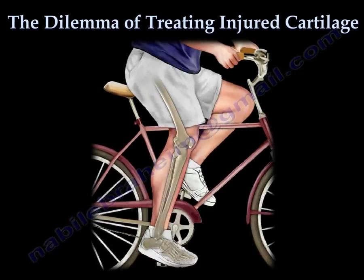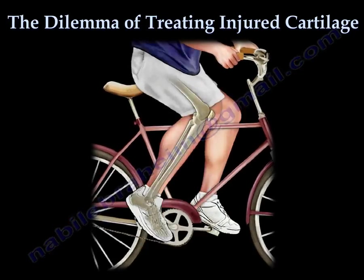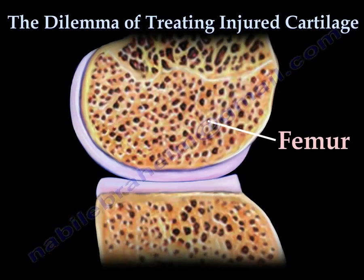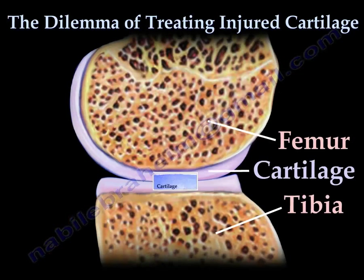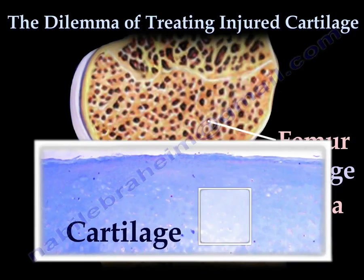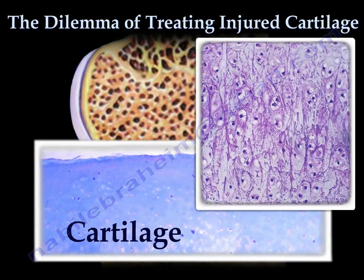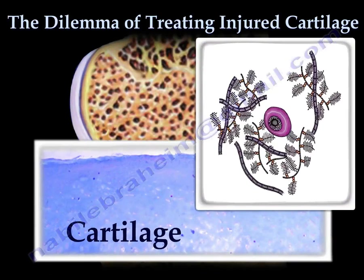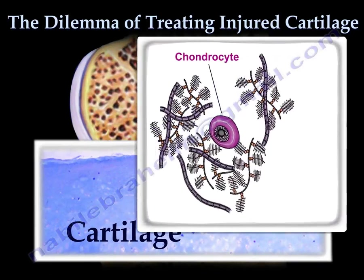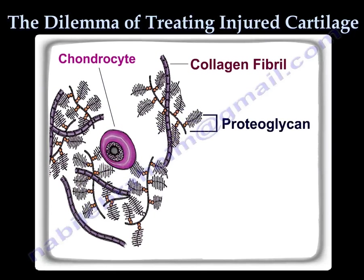Cartilage is the tough but flexible connective tissue that gives shape, support, and provides cushion between bones and the joints. Unlike other connective tissue, cartilage does not have its own blood supply. Instead, it is composed primarily of water, chondrocytes, collagen, and proteoglycans, which produce and maintain a structural matrix giving cartilage tissue its form and function.